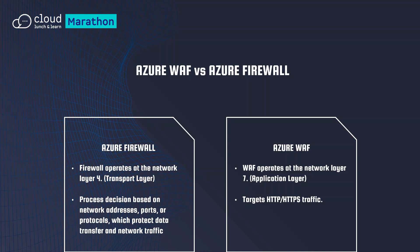Now let's discuss the difference between Azure WAF and Azure Firewall. Azure Firewall operates at network layer 4, the transport layer, and makes processing decisions based on network address, ports, and protocols, which protects data transfer and network traffic, but not applications. Azure WAF, on the other hand, protects web applications by not only operating at layer 4 but also targeting HTTP and HTTPS traffic, taking advantage of working at layer 7, the application layer.